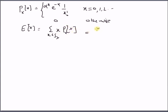This is basically going to be equal to the summation from x = 0 to infinity of x · α^x · e^(-α) / x!, which is going to be e^(-α) times the summation from x = 0 to infinity of x · α^x / x!.